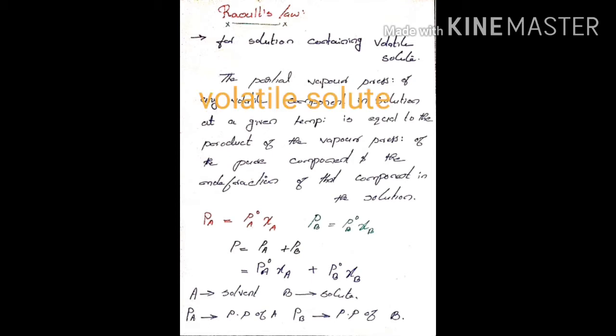Then, in the solution, we have components A and B. A is the solvent, and B is the solute. That means A and B — A is solvent, B is solute. So let's say, volatile solute.